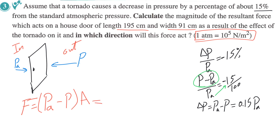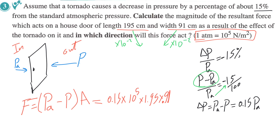This will equal 0.15 multiplied by P times A, which equals 0.15 times atmospheric pressure, times the area of the door, which is 1.95 multiplied by 0.91, multiplied by 10 to the power of negative 2, multiplied by 10 to the power of negative 2. The result is 26617.5 Newton.